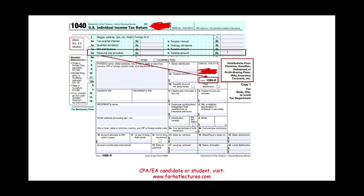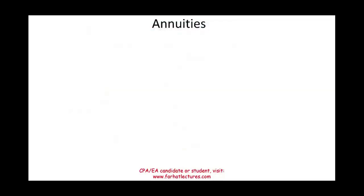When you have an annuity or a pension, you will receive a Form 1099-R, which tells you the gross distribution, how much is taxable, and any federal taxes withheld. On Form 1040, there is a line 5a for pensions and annuities — some of the pension or annuity may be non-taxable and some taxable.